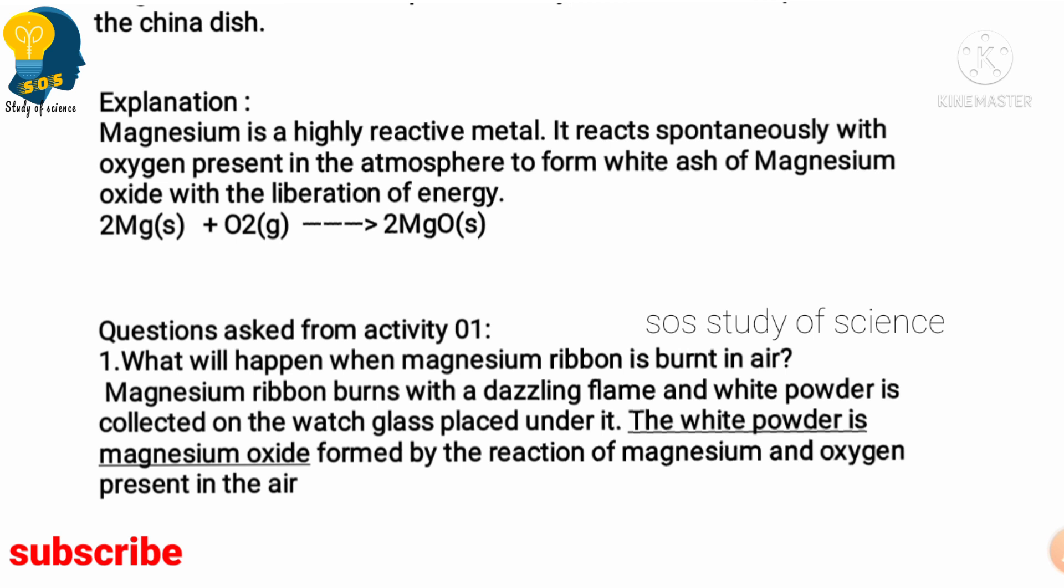Three things you may have to remember: when we burn magnesium ribbon it forms a white dazzling flame, the magnesium is burnt to form ash out of it, and this magnesium ash is now called as magnesium oxide. Hope you found this activity useful. In the next video I'll be explaining your Activity 1.2.